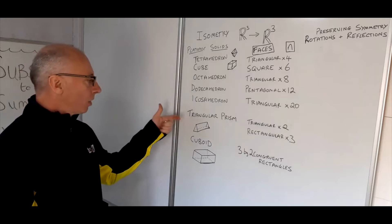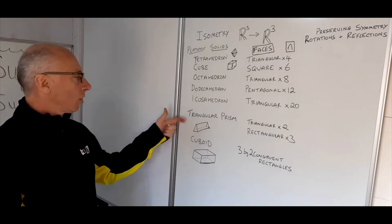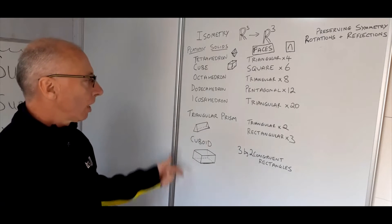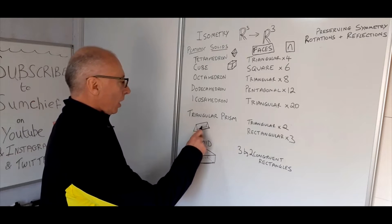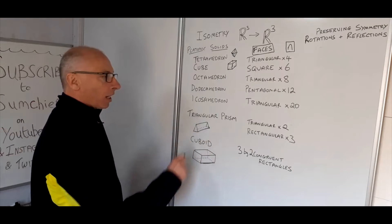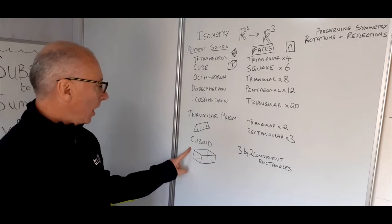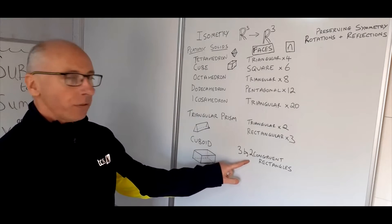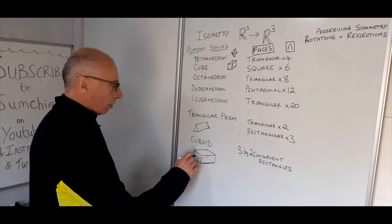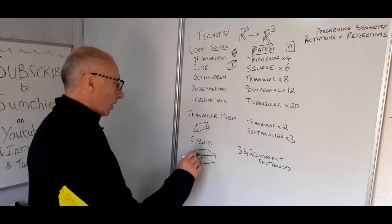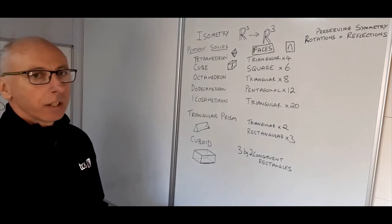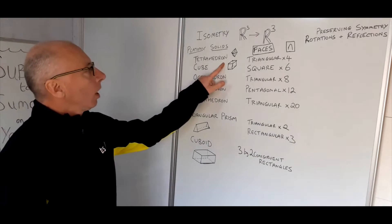We'll work out the symmetries of those, and then we'll also work out these two shapes: a triangular prism and a cuboid, which are irregular three-dimensional shapes. The triangular prism has two triangular faces at the ends and three rectangular faces in the center. The cuboid has three pairs of congruent rectangles — opposite faces match.